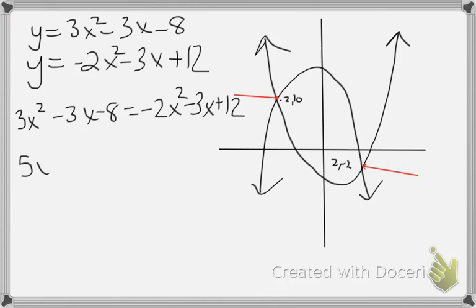So moving 2x across, I have a 5x squared. The x's actually cancel, so that's nice. So I'm actually going to leave a number on the right there. So add 8, I got 5x squared equals 20.